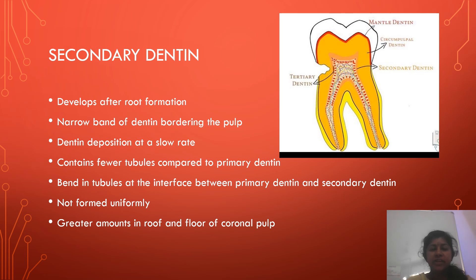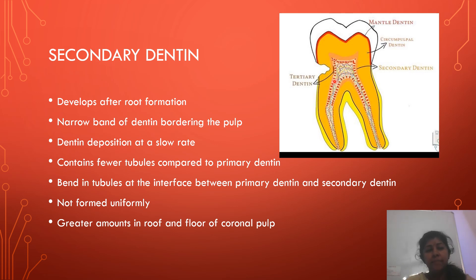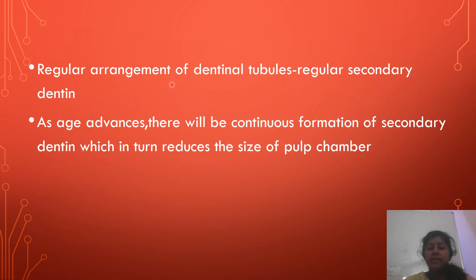By definition, secondary dentine is the dentine which is formed after root completion. Primary dentine formation stops at root completion, but dentine formation continues — the dentine formed after this is secondary dentine. As long as odontoblasts are present in the pulp, they continue depositing secondary dentine. In comparison with primary dentine, the rate of deposition of secondary dentine is low. Moreover, the rate may differ within the tooth — it is high in the roof and floor of the pulp chamber or the coronal pulp. If the secondary dentinal tubules are arranged regularly, then the secondary dentine will be regular. As age advances, there will be continuous formation of secondary dentine, which in turn reduces the size of the pulp chamber.